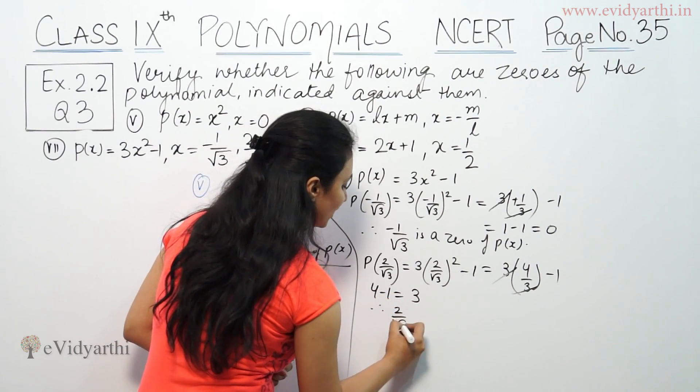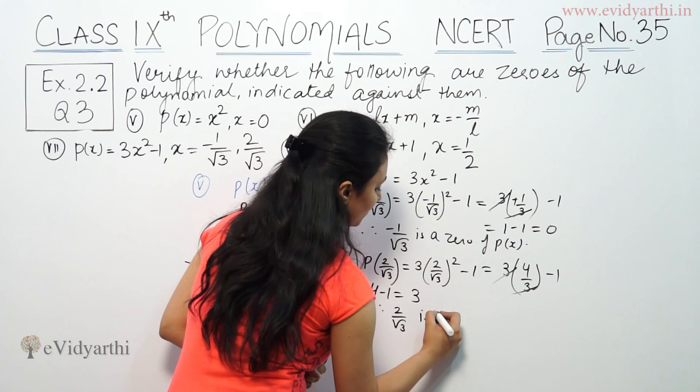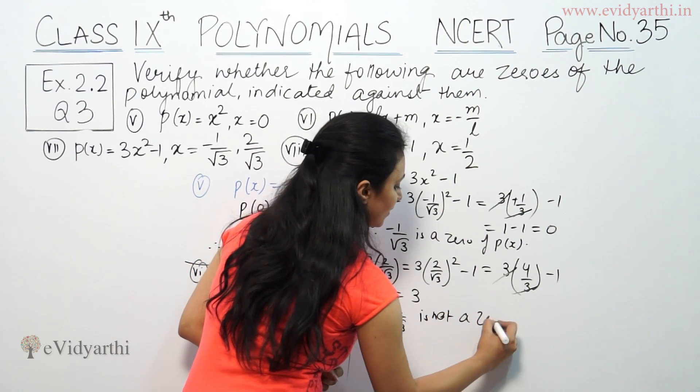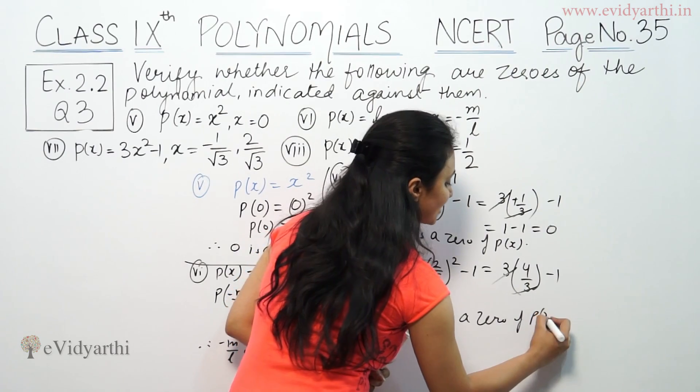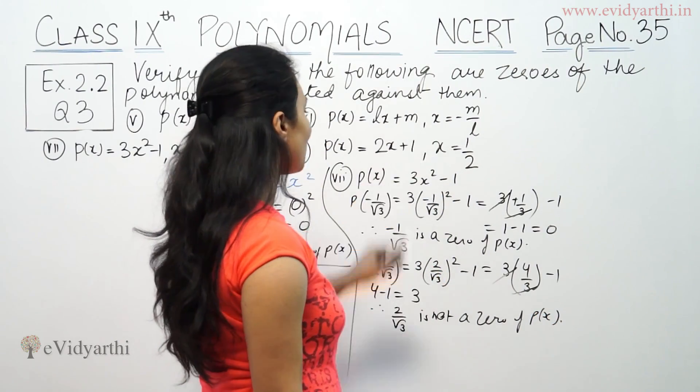Therefore, 1/√3 is not a zero of P(x). We have to check the last part.